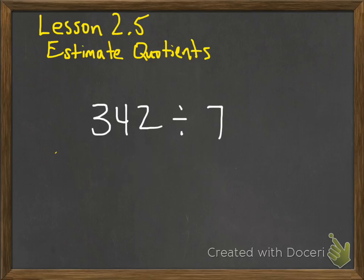So what we do is we find something called compatible numbers. What I want you to do is think of your multiples of 7. You look at the divisor and you think of the multiples of that divisor. You take a look and see which multiple is closest to the first two digits in the dividend. So you look at the 7, you look at the 34.